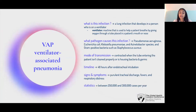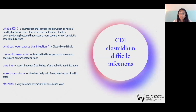Next is VAP, or ventilator-associated pneumonia — pneumonia from a lung infection that develops in a person on a ventilator, which is a machine that helps a patient breathe by giving oxygen through a tube placed in the patient's mouth or nose. Finally, CDIs are infections caused by the disruption of normal healthy bacteria in the colon, often from antibiotics, where toxin-producing bacteria cause a severe form of antibiotic-associated diarrhea. CDIs are also a very common nosocomial infection.